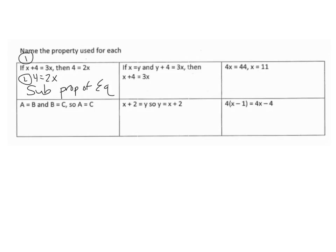Second one: if x equals y and y plus 4 equals 3x, then x plus 4 equals 3x. The difference is the first has y and the second has x. What happened was we substituted x equals y — so instead of writing y, I wrote x. That's called substitution.